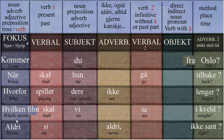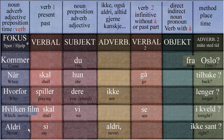"Hvilken film skal vi se i kveld?" — Which movie shall we see tonight? "Hvilken," in this form, agrees with "en film" — the word film is an N-word, en-word. Unless you're from Oslo, then you don't use the A ending. It's really good to just start trying to speak Norwegian first, and then fine-tune your different noun forms.